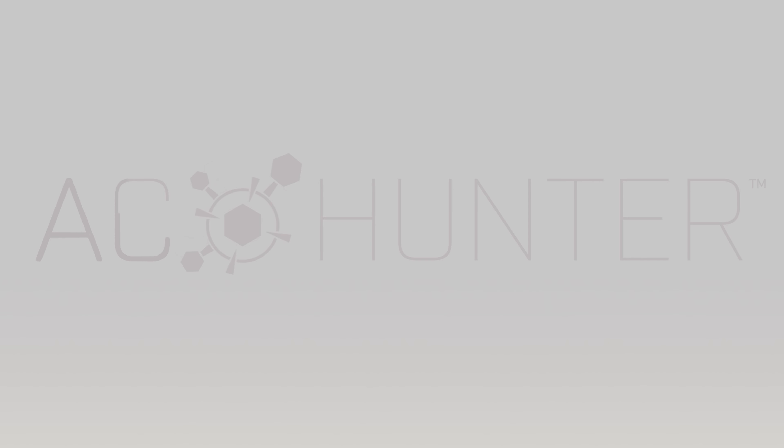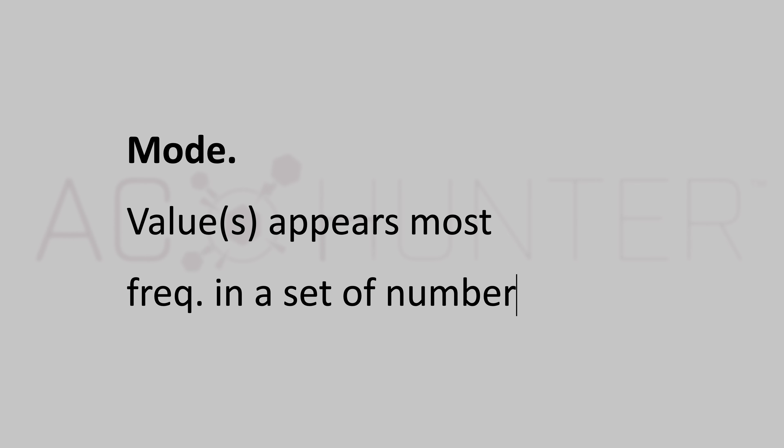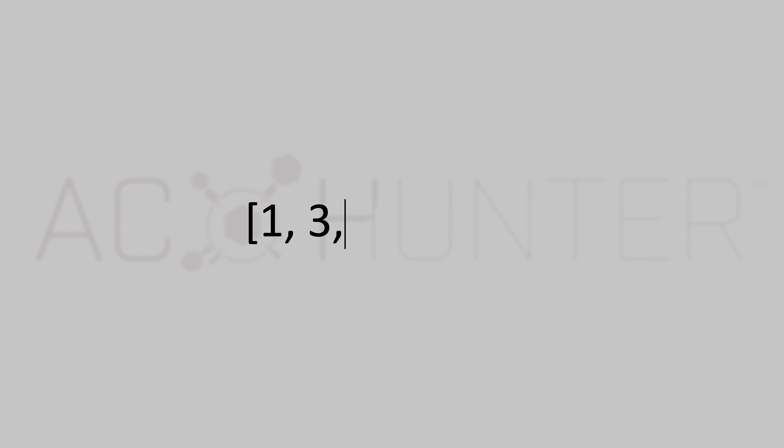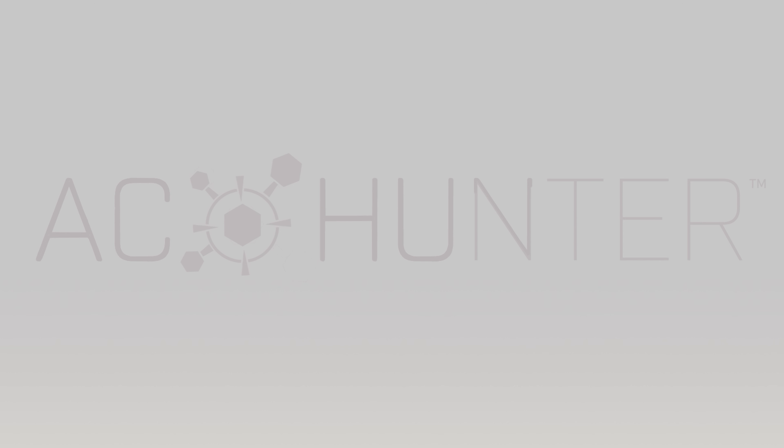The next important foundational term is mode. The mode is simply the value that appears most frequently in a set of numbers. For example, if we have a set consisting of one, three, three, three, three, and five, our mode is three — because the number three appears four times, which is more frequent than either one or five.